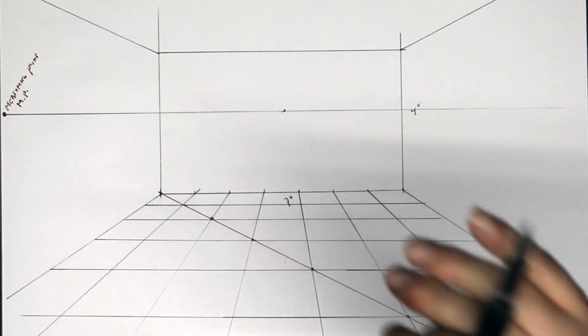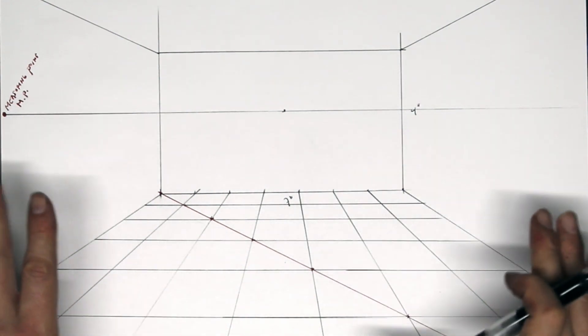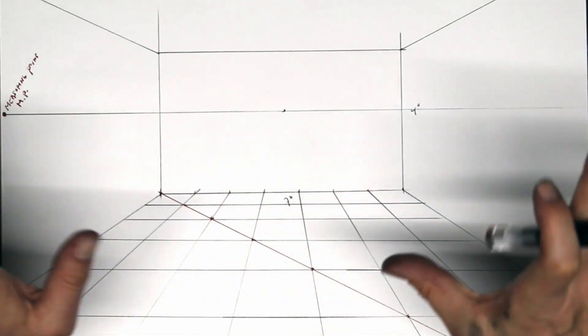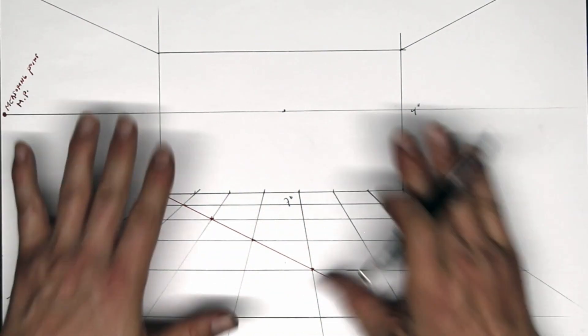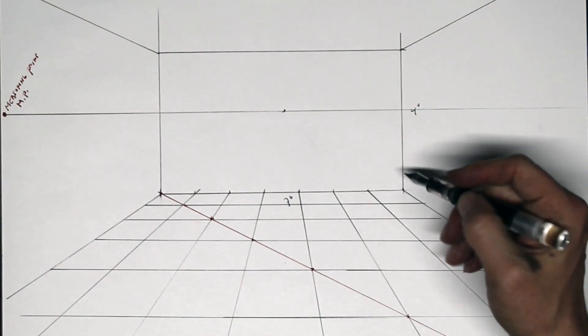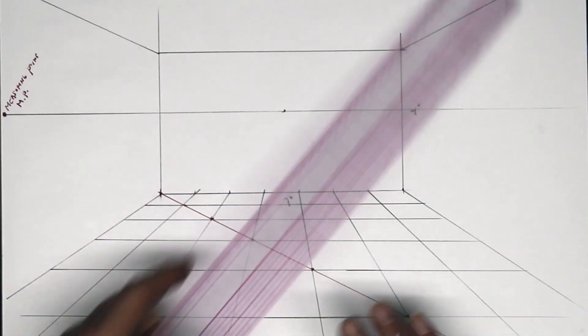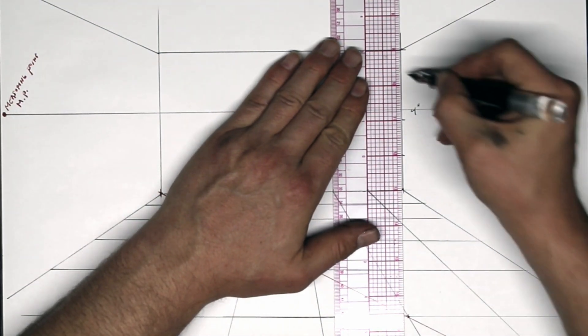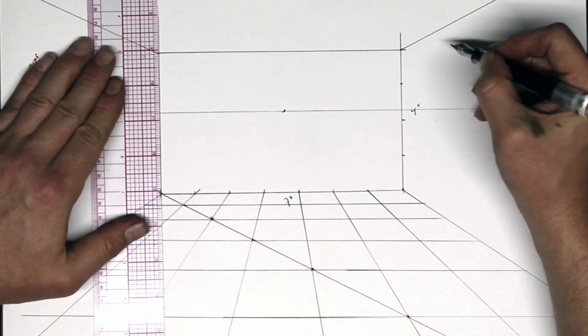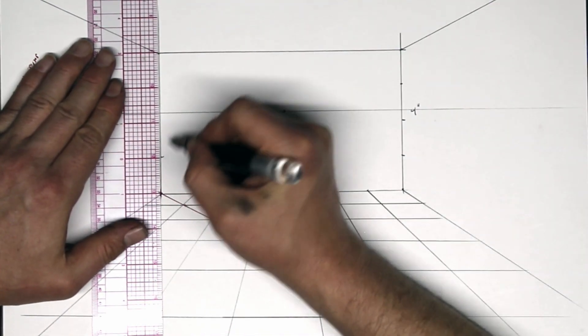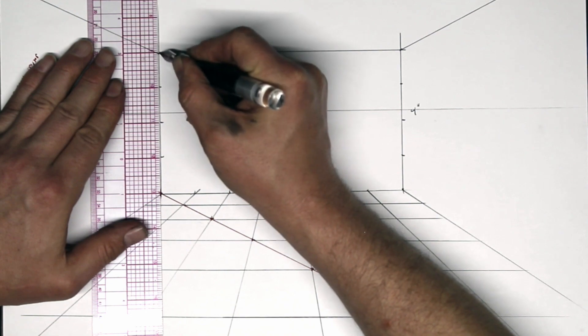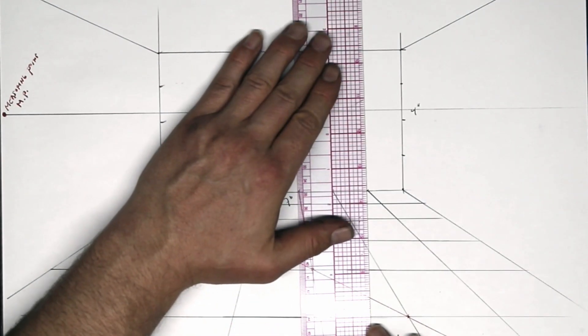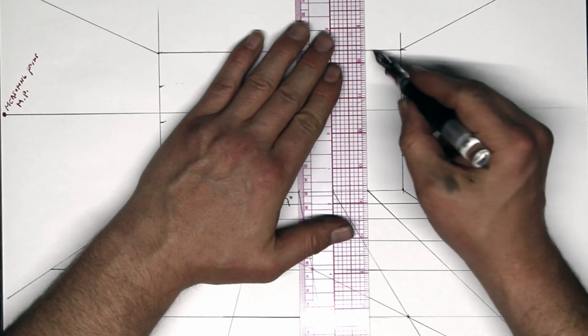So the first step is to build the same grid on our back wall and our side walls. Let's start off with the back wall by measuring out even increments going up. Let's get our vertical lines first.